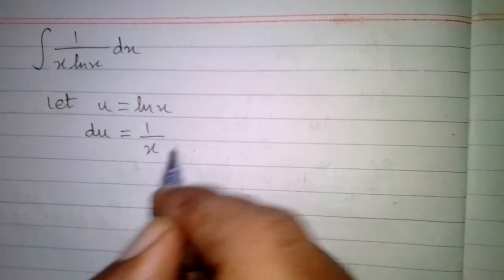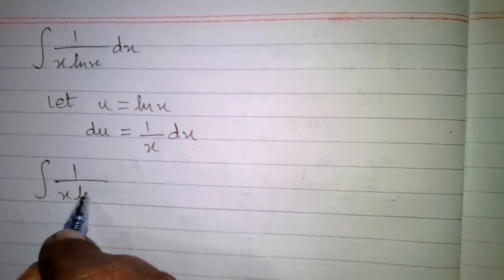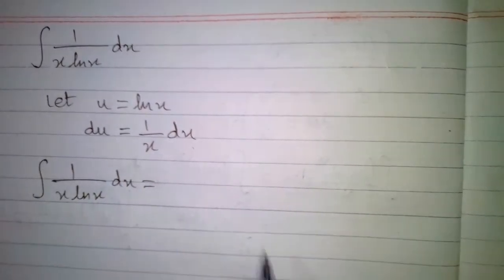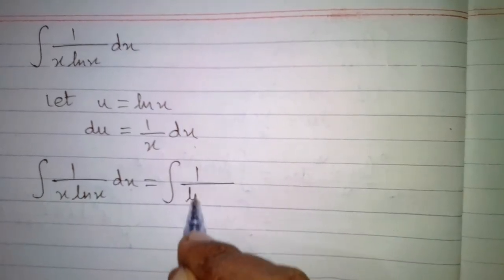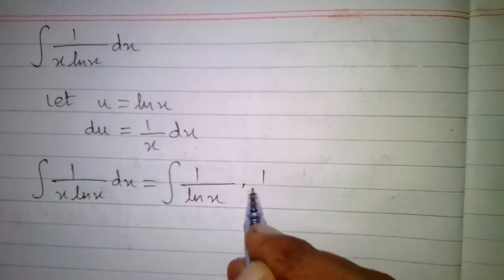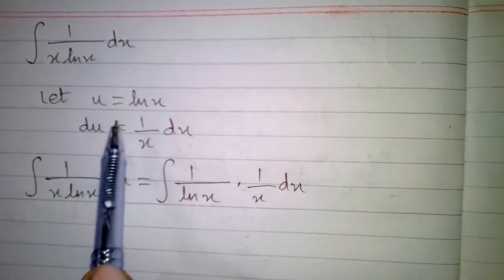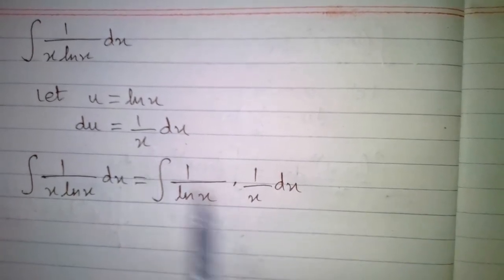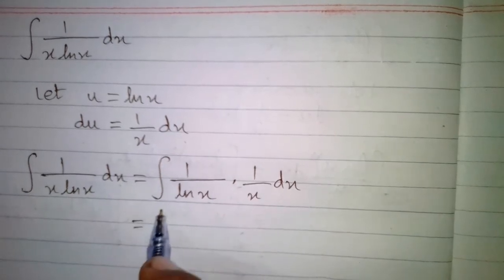which is 1 upon x multiplied by dx. The integral of 1 upon x ln x with respect to x can be written as 1 upon ln x multiplied by 1 upon x dx. We can put u in place of ln x, and in place of 1 upon x dx we can put du.